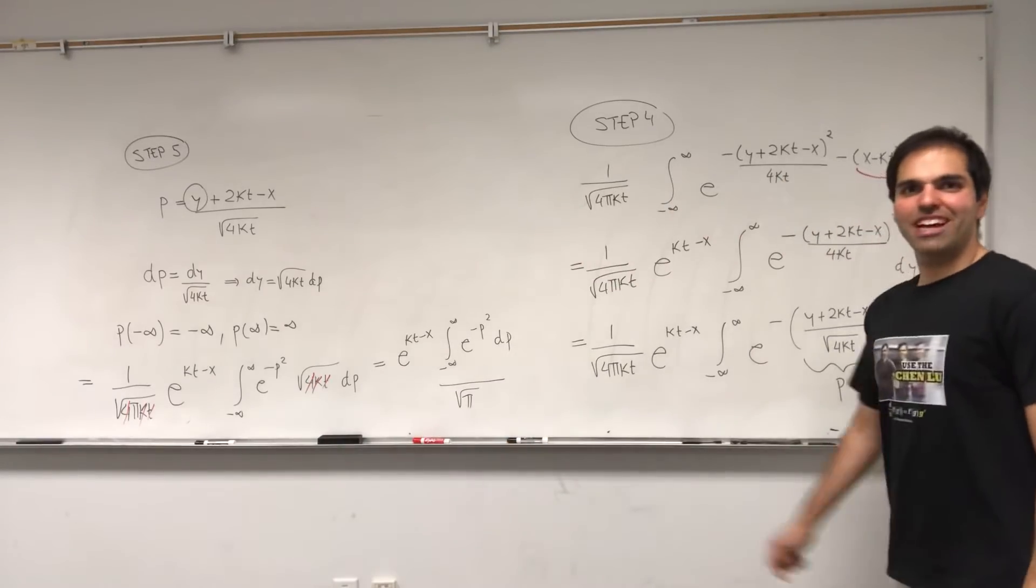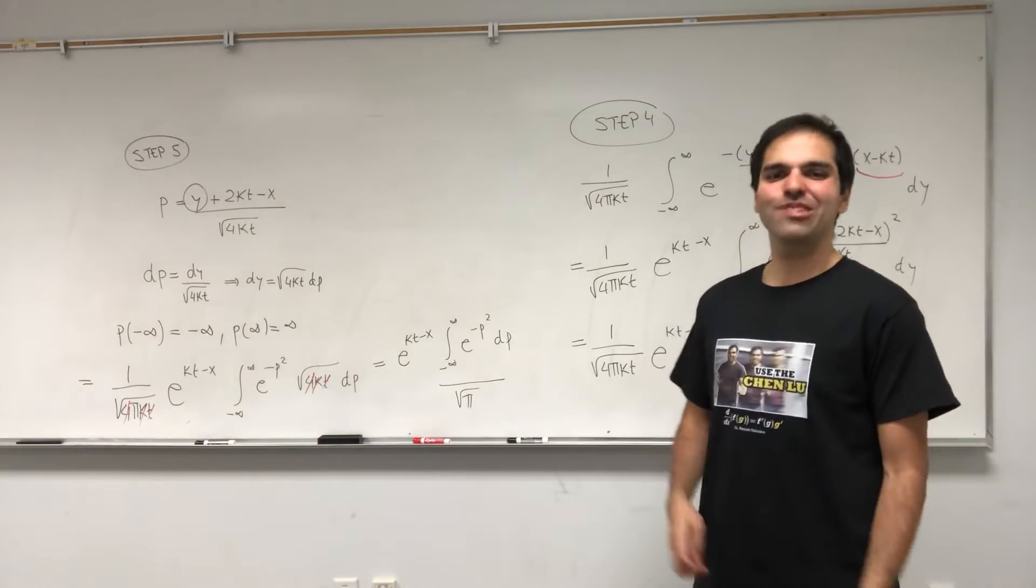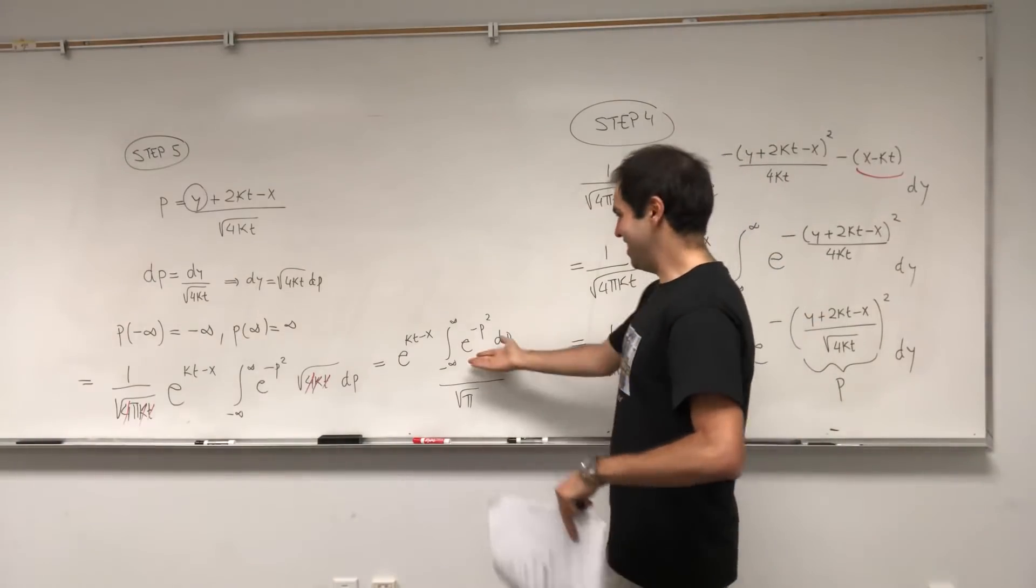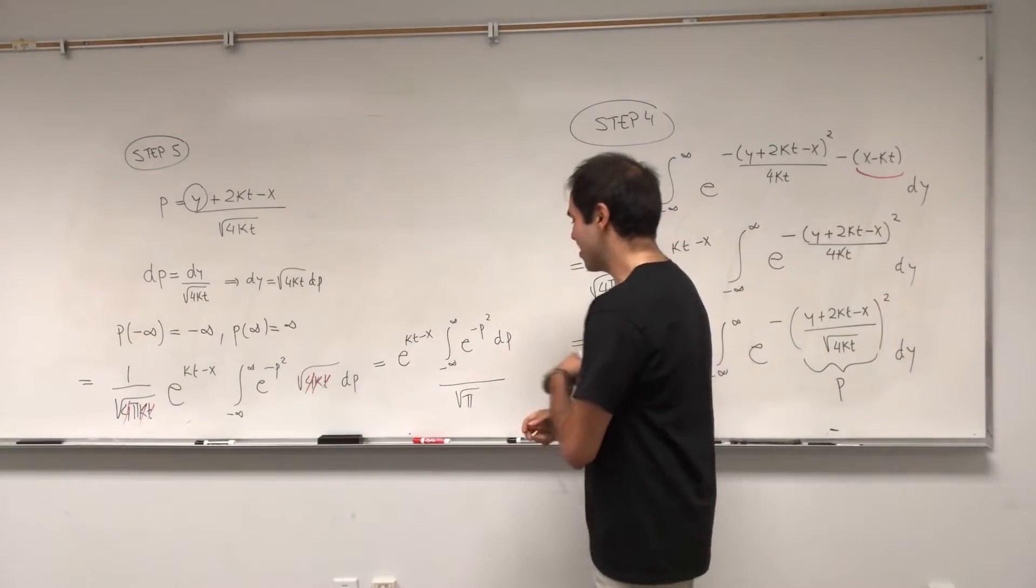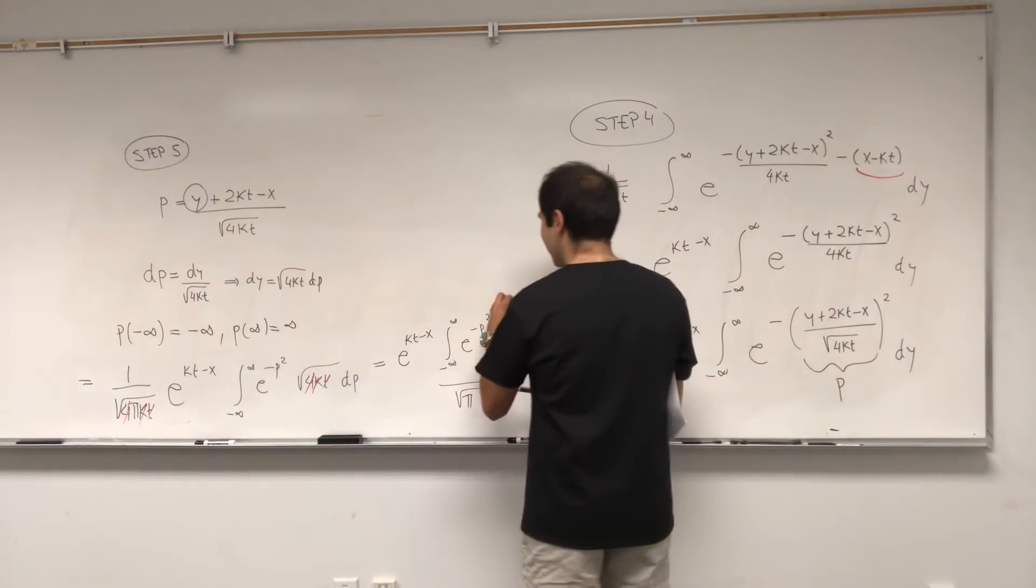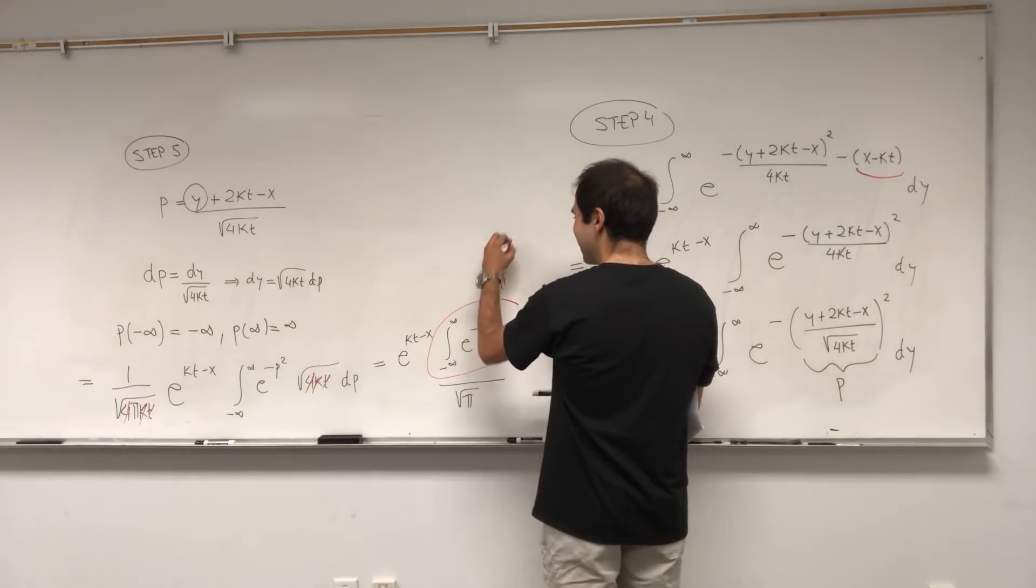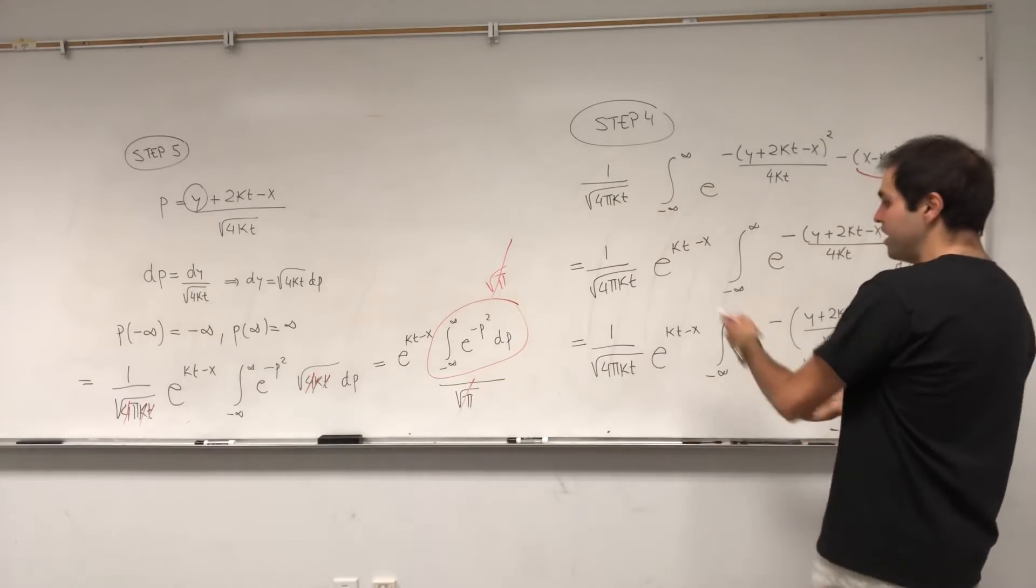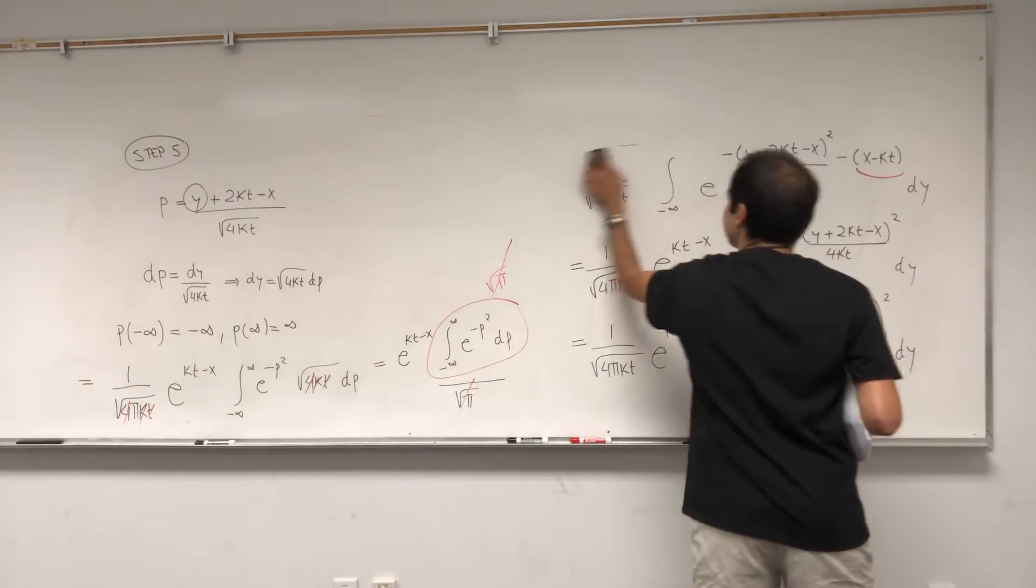And then you're left with e to the kt minus x, integral from minus infinity to infinity, e of minus p squared dp over square root of pi. But as my bad luck would have it, I forgot to, I brought the wrong shirt, I meant to bring my Gaussian integral shirt. But you can watch another video, I would say 12 other videos about 12 or 13 ways to watch the Gaussian integral. And you find this is square root of pi, which is perfect because it cancels out with this. So it turns out the integral at the end is just e to the kt minus x.